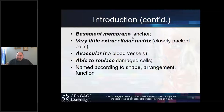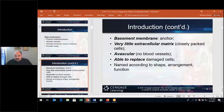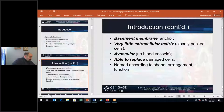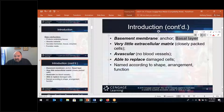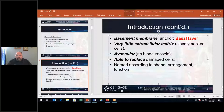The basement membrane is the anchor — it's called the basal surface. Think of it like the basement of a home: it's at the very bottom. At the bottom of the cell we'll see the basal layer. These cells in epithelial tissue are very tightly packed, very close together.